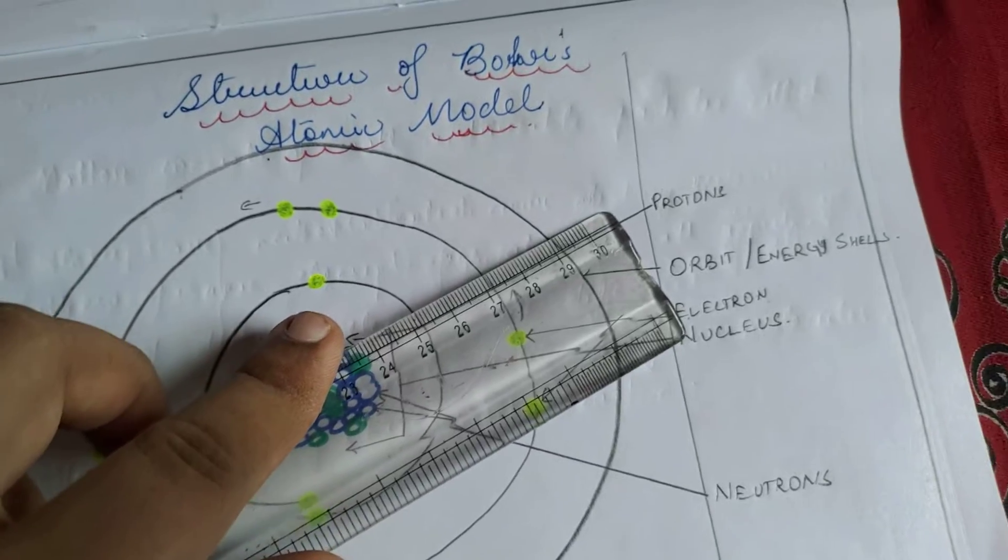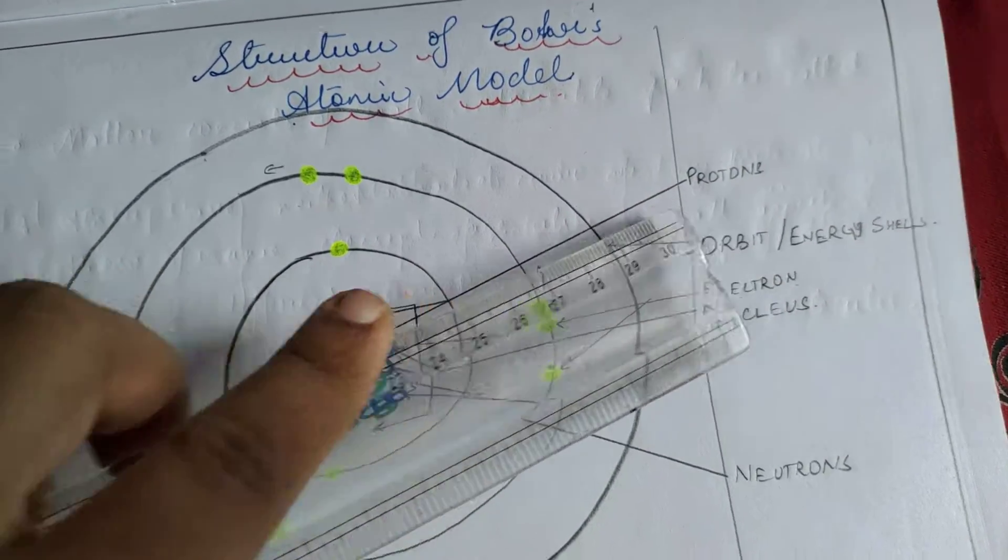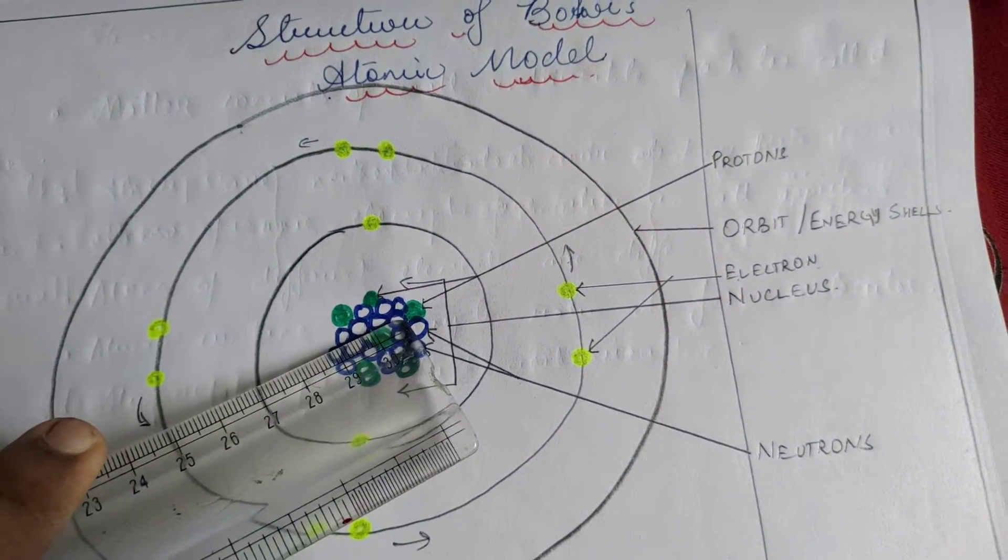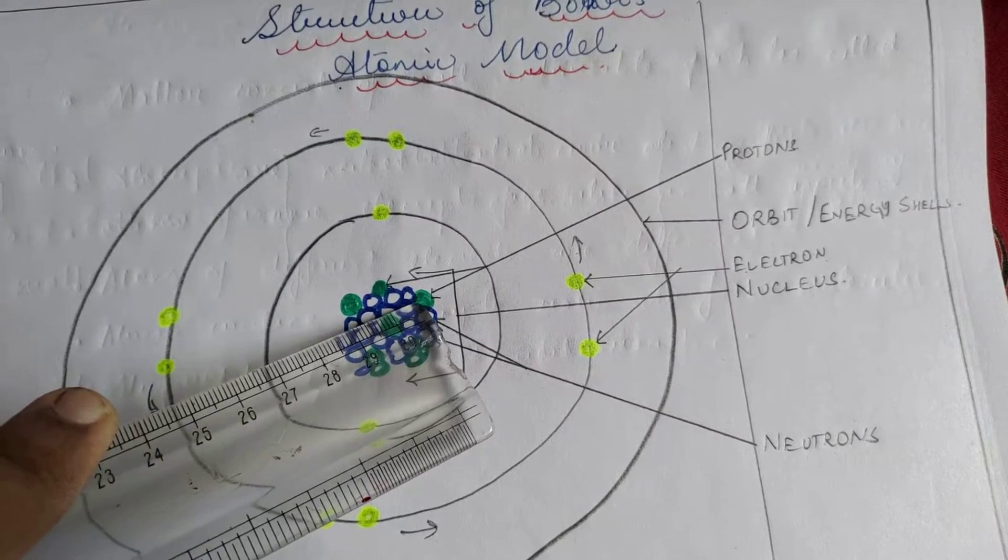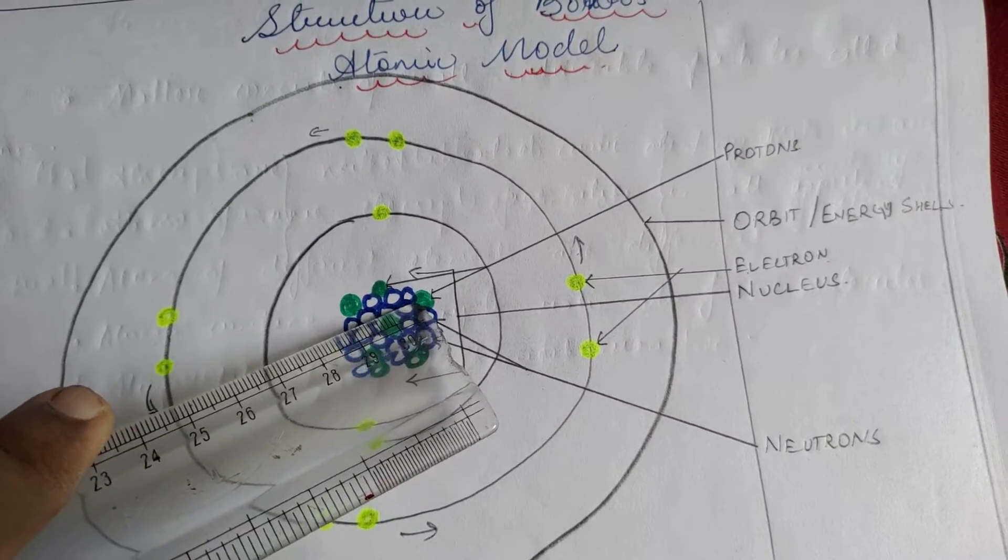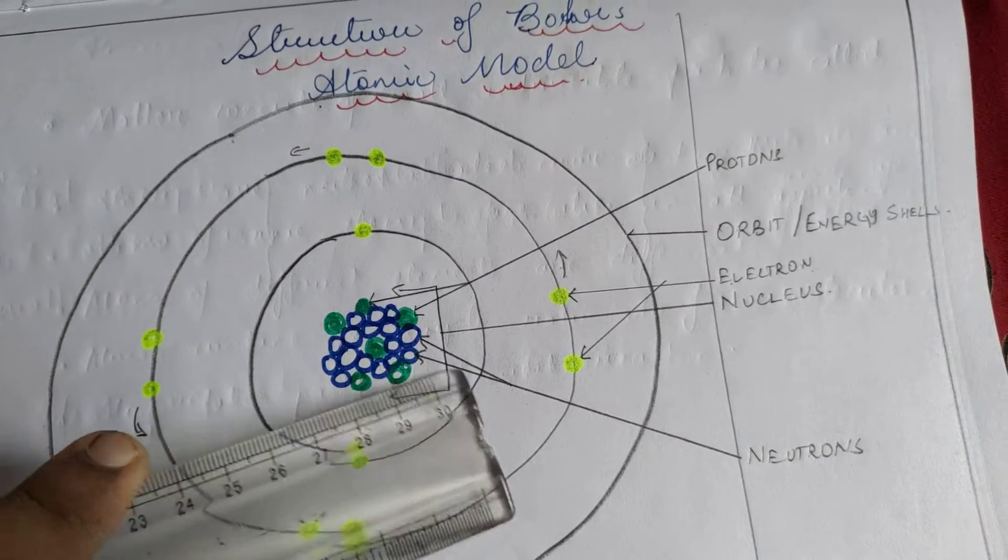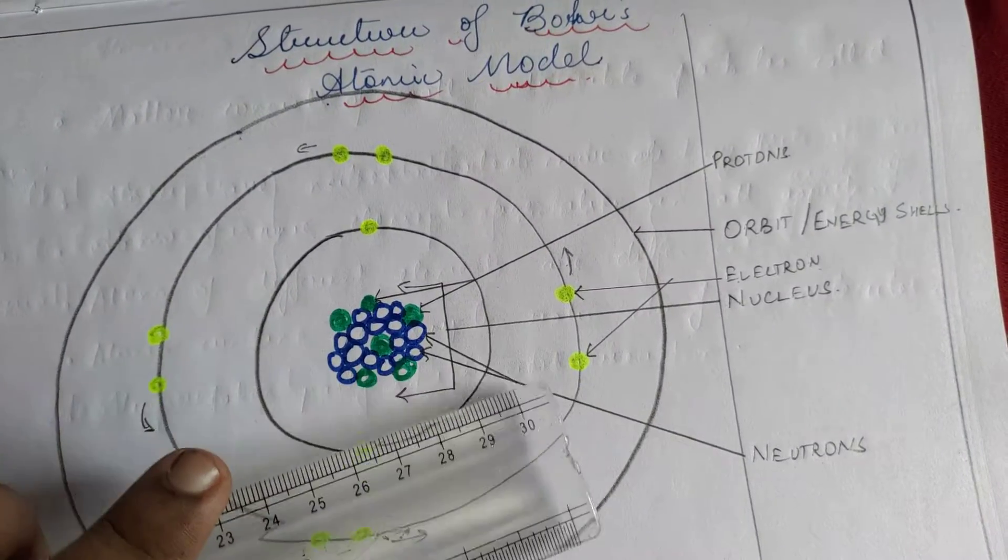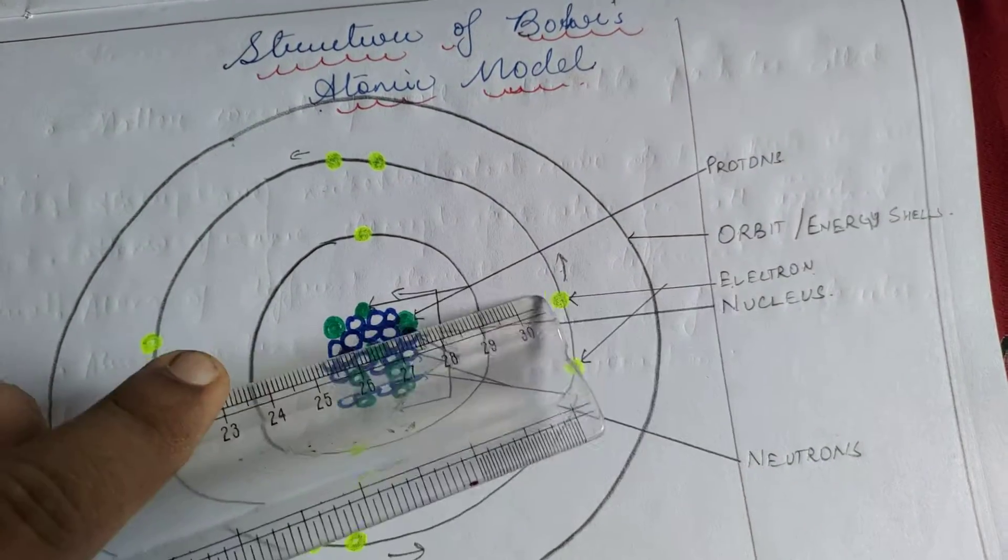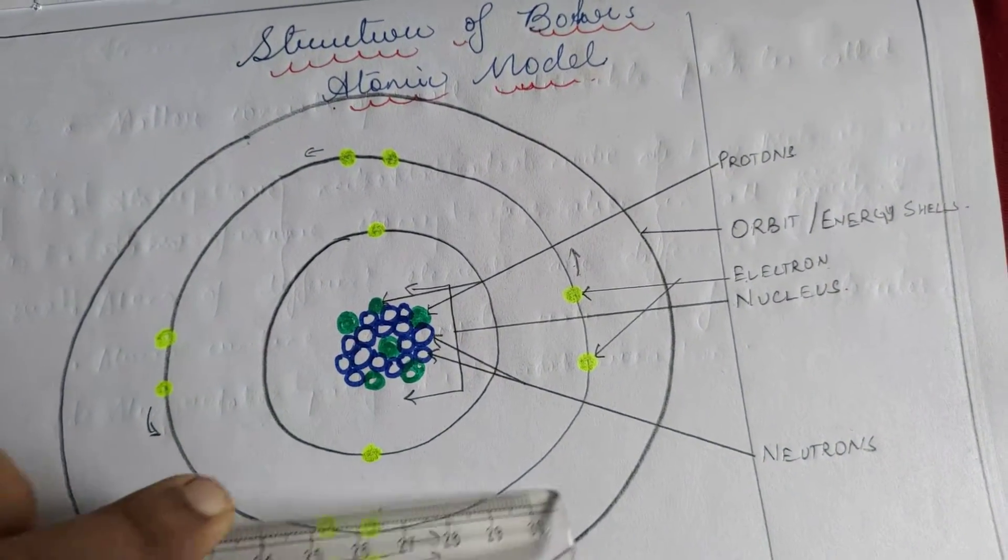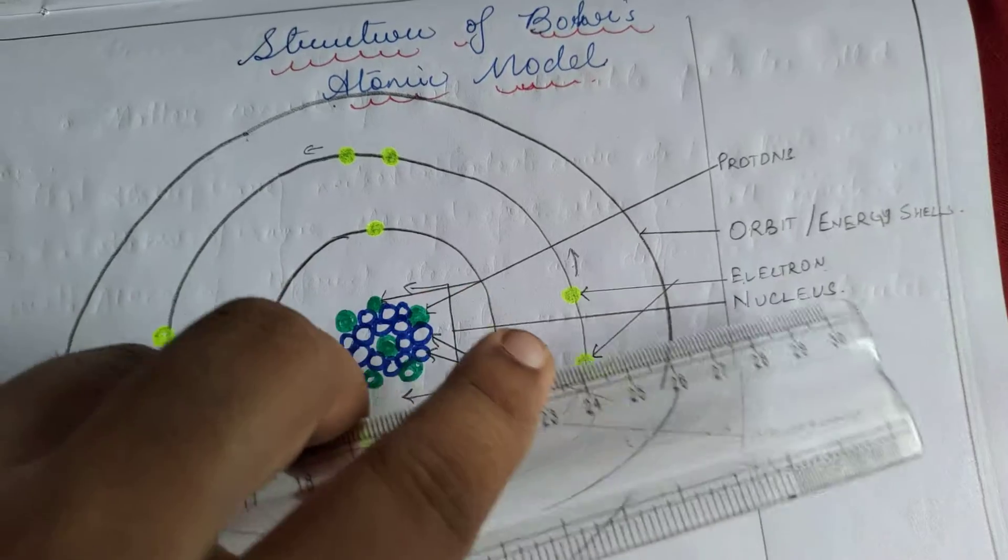Once again let me refer to you that protons which lie in the nucleus are positively charged. Neutrons which are again present in the nucleus are neutral means they have no charge whatsoever. Electrons which revolve around the nucleus in a particular orbit are negatively charged.